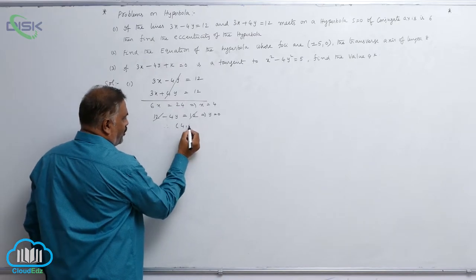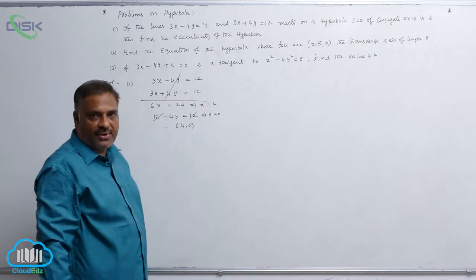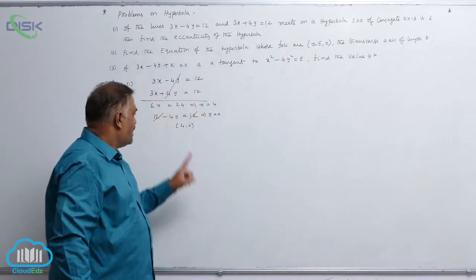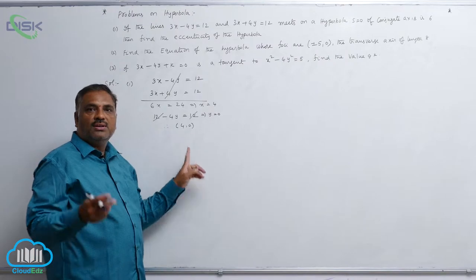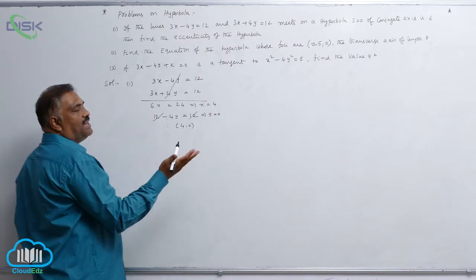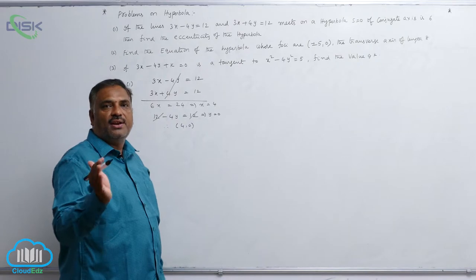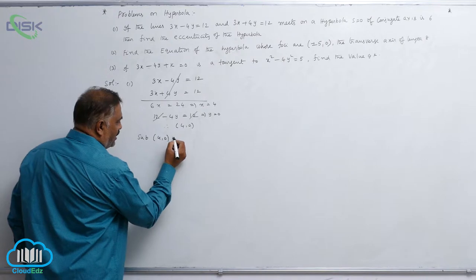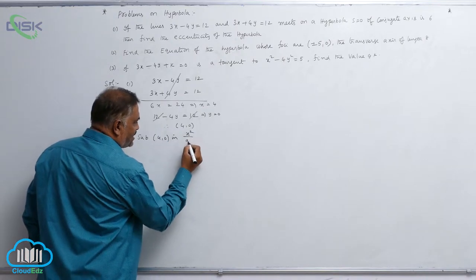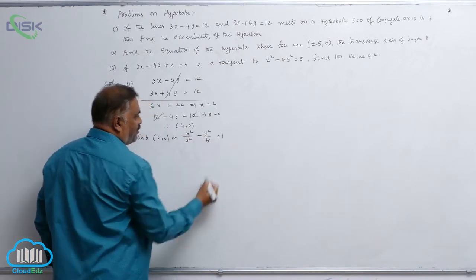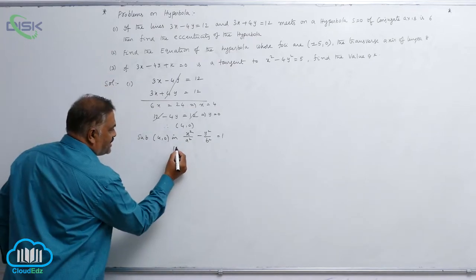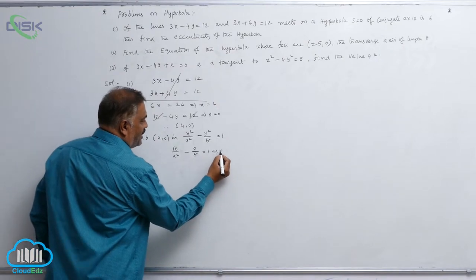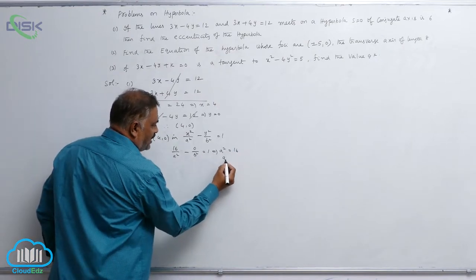Therefore (4, 0) is the point of intersection. Since these two lines meet on the hyperbola, the point (4, 0) lies on the hyperbola. Assuming the standard equation of hyperbola, substitute (4, 0) into x² by a² minus y² by b² equal to 1. We get 16 by a² minus 0 by b² equal to 1, so a² equal to 16.